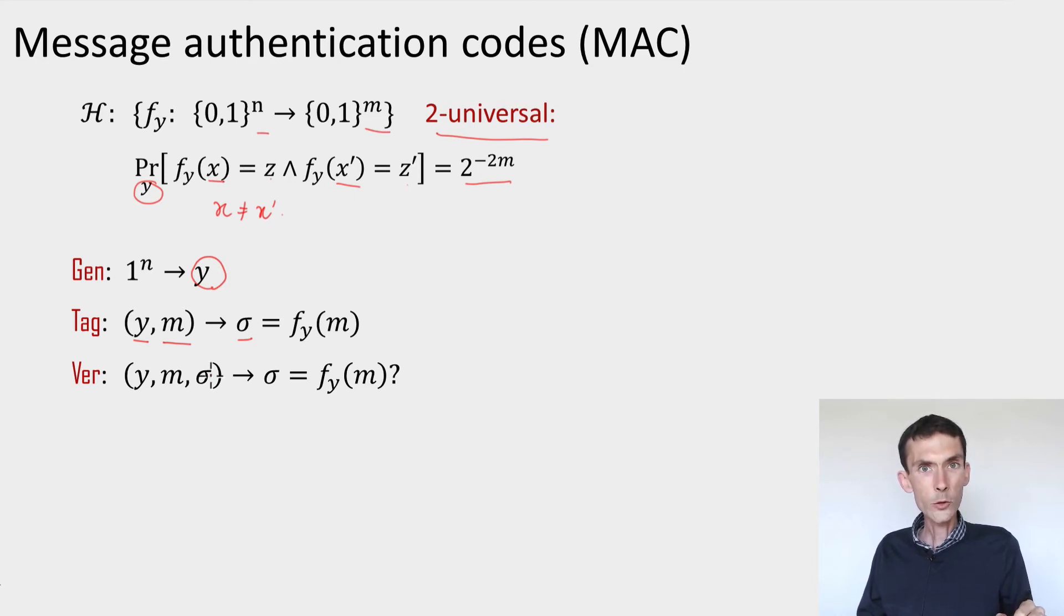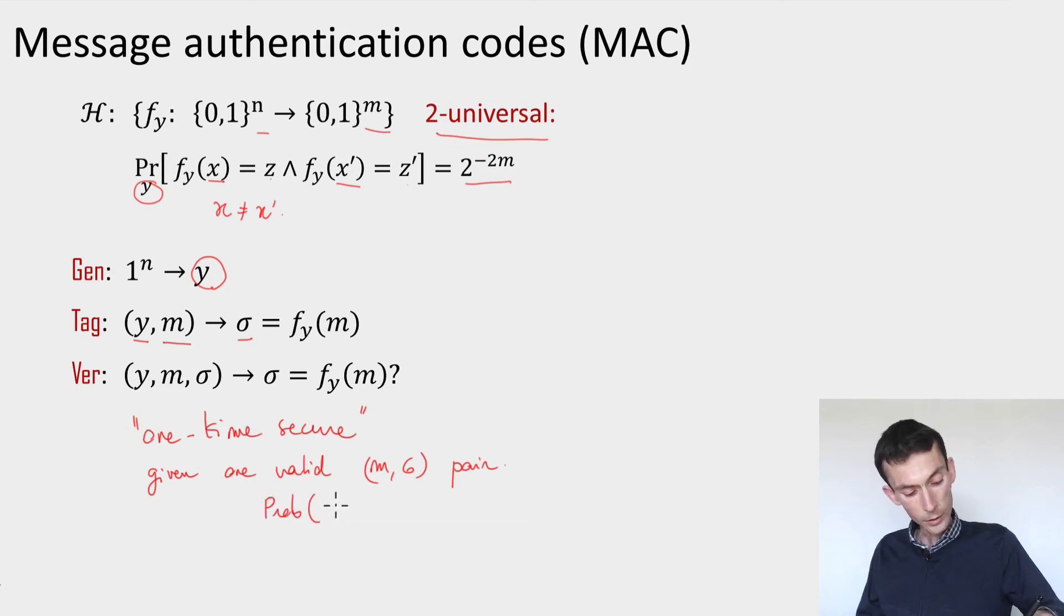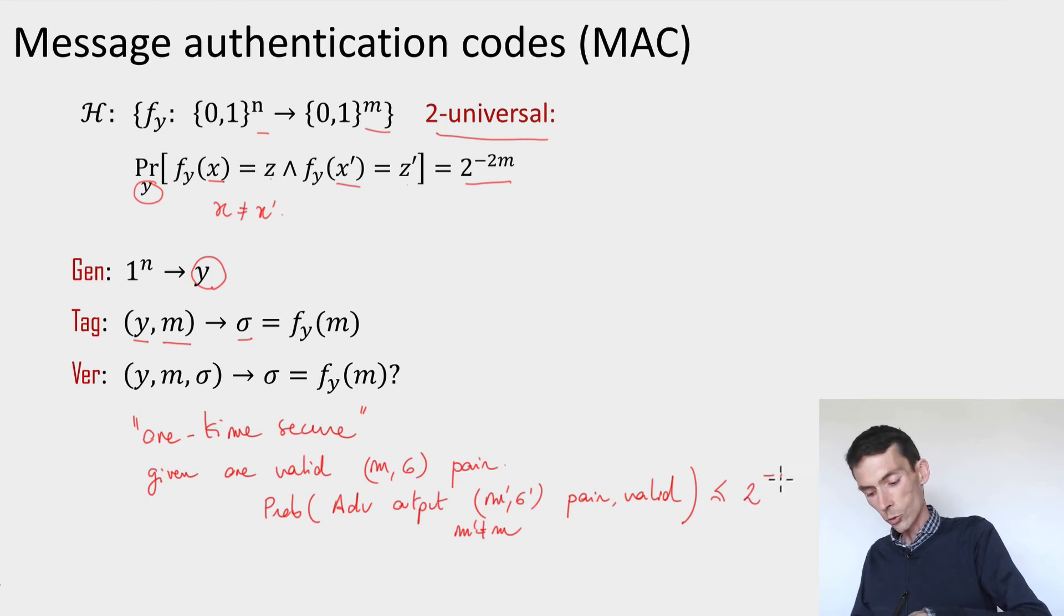Now if you think through the security definition that I gave you on the previous slide, you can show that this MAC has the property of being so-called one-time secure. What being one-time secure means is that if you're given one valid message signature pair, then the probability that the adversary can output another valid message signature pair, where m prime is different from m, then this probability will be at most, in our case, 2 to the minus n. You can show this simply using the property of two universality of the family of hash functions.